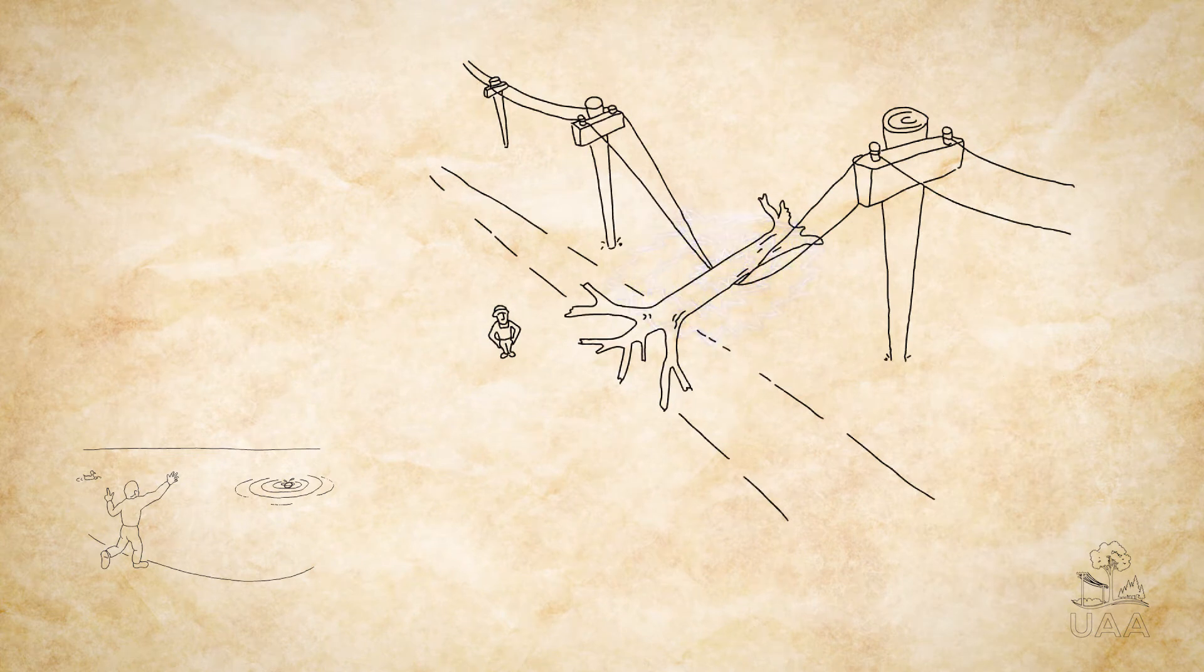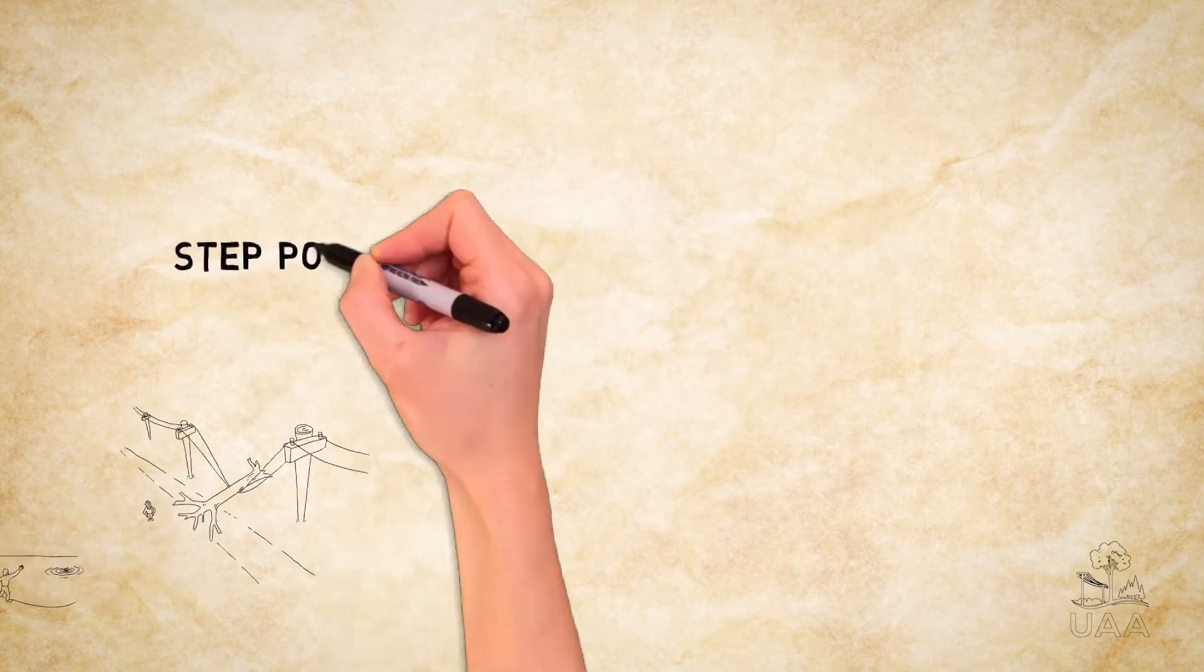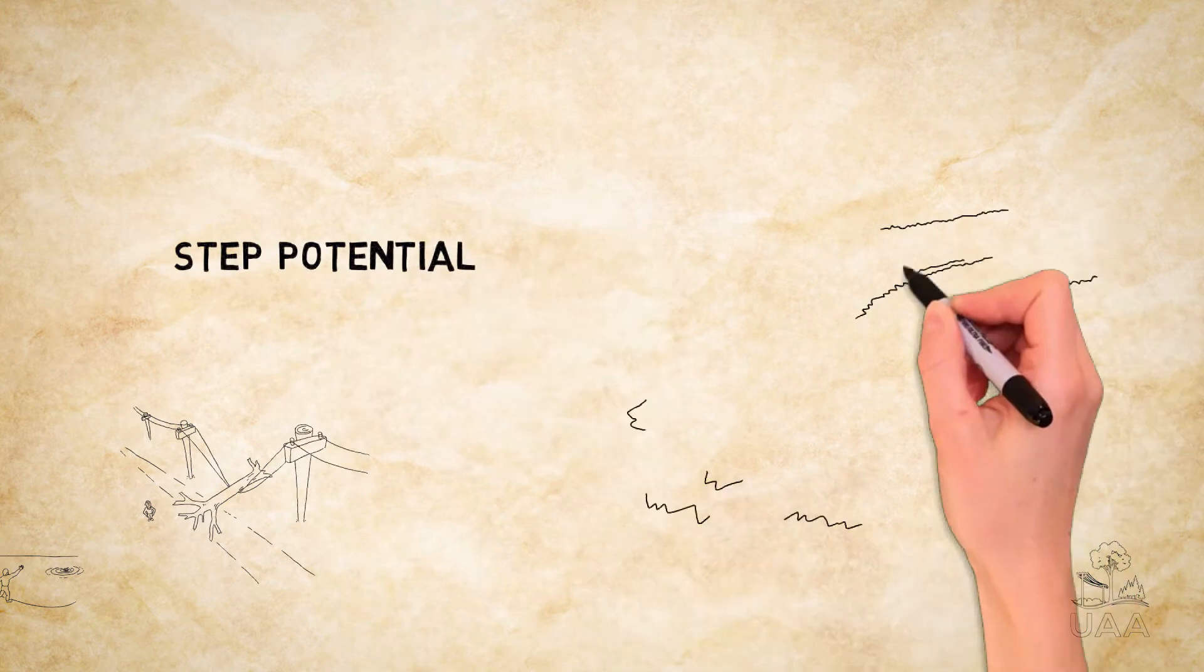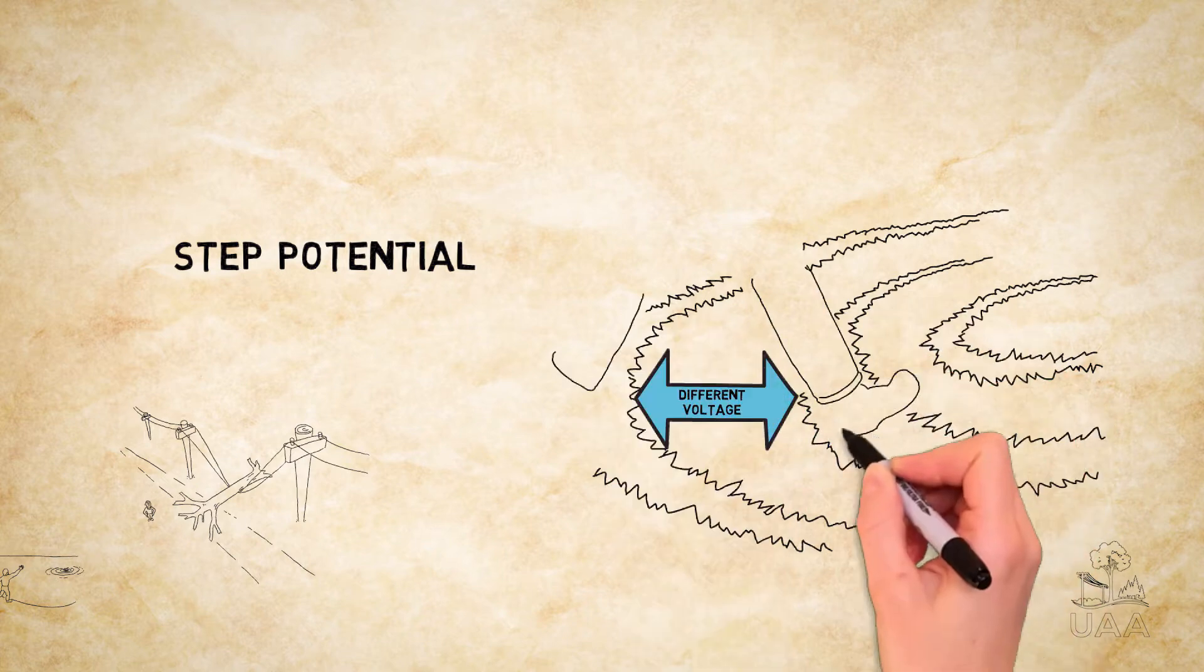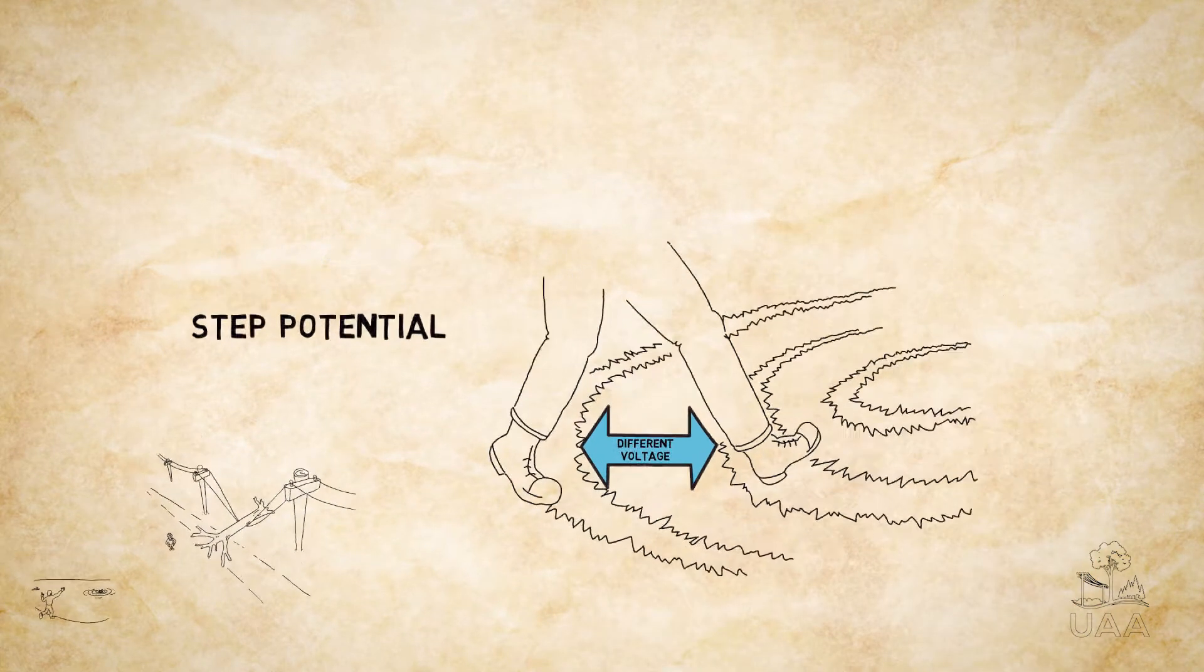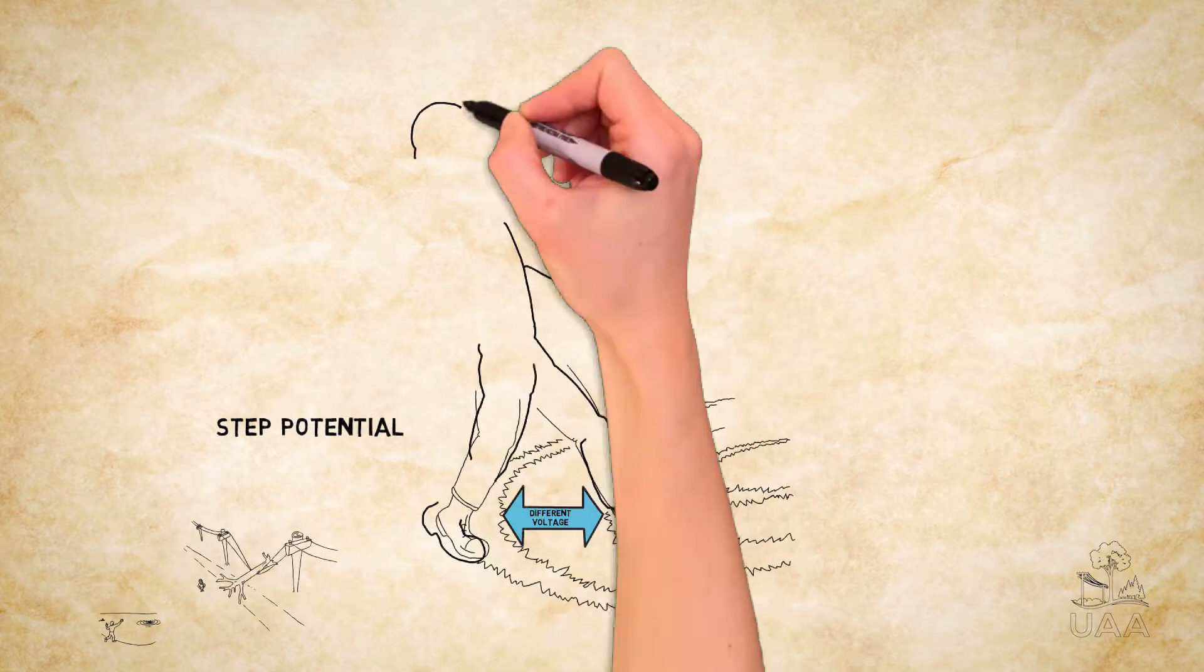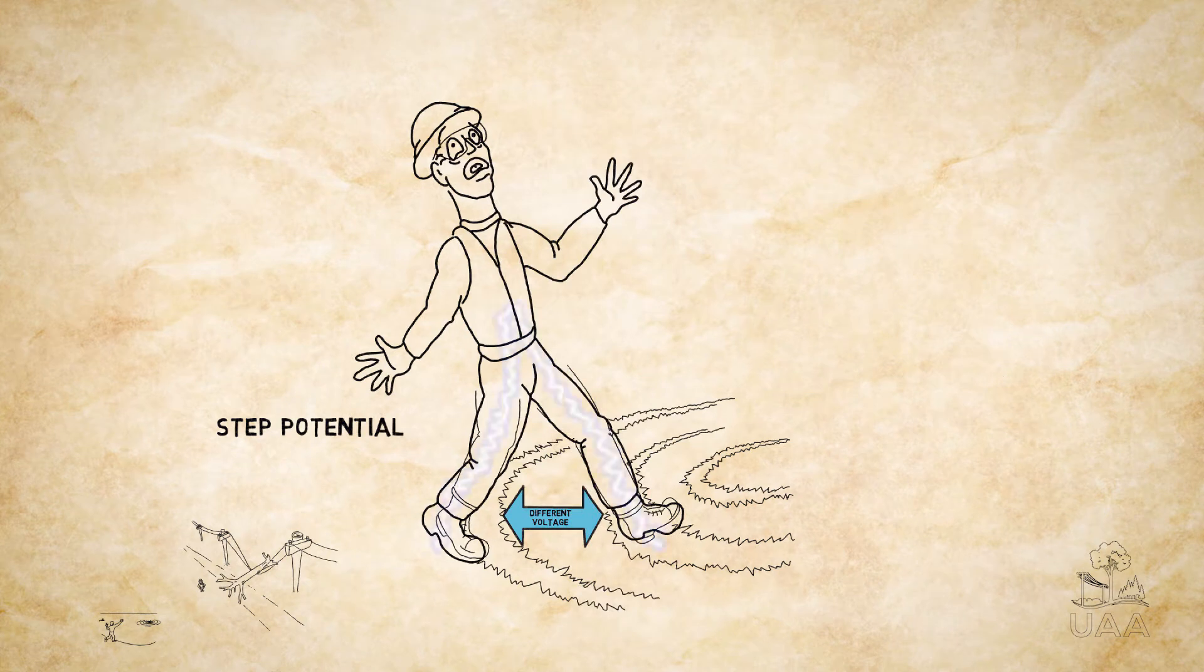The energy is greatest at the center point of the contact and diminishes as it spreads away from the point of impact. Step potential is the difference in voltage that occurs between each ripple and a person's feet when they take a step into a potentially energized area. If a person's feet are not on the same concentric ripple at the same time, electricity will flow through a person's body to make up the voltage difference between the ripples.